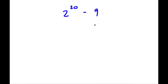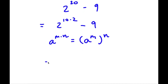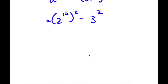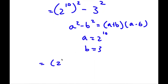Now I have 2 to the power of 20 minus 9. We can rewrite 2 to the power of 20 as 2 to the power of 10 times 2, because 20 equals 10 times 2. Using the property a to the power of m times n equals a to the power of m to the power of n, that becomes 2 to the power of 10 to the power of 2. And 9 we can rewrite as 3 squared. Using the difference of squares a squared minus b squared equals a plus b times a minus b, where a equals 2 to the power of 10 and b equals 3, I get 2 to the power of 10 plus 3, times 2 to the power of 10 minus 3.